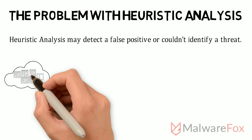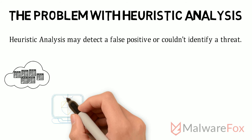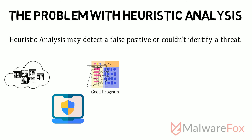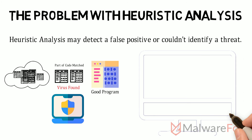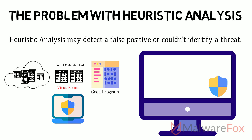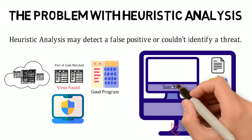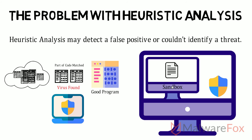The static heuristic analysis matches a part of source code with the code of a virus. If a non-virus program contains code that matches with a virus, that good program will falsely be identified as a virus — that's why it needs to be carefully tuned. Similarly, the dynamic heuristic analysis may fail if the particular program is set not to take action immediately. If the virus doesn't take any action while running in the virtual environment, it will be declared a good program.